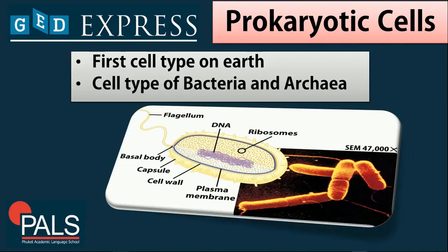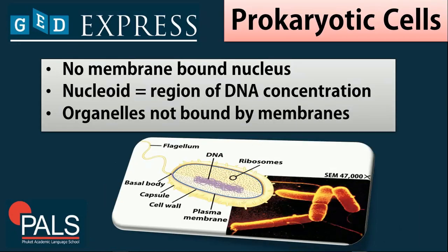When we say prokaryotic, the first cell type on earth is known as prokaryotic cells. These cell types are primarily those with bacteria and archaea. Prokaryotic cells only have one cell, or they don't have a true nucleus. They have no membrane-bound nucleus, their nucleoid is the region of DNA concentration, and the majority of their organelles are not bound by membranes.